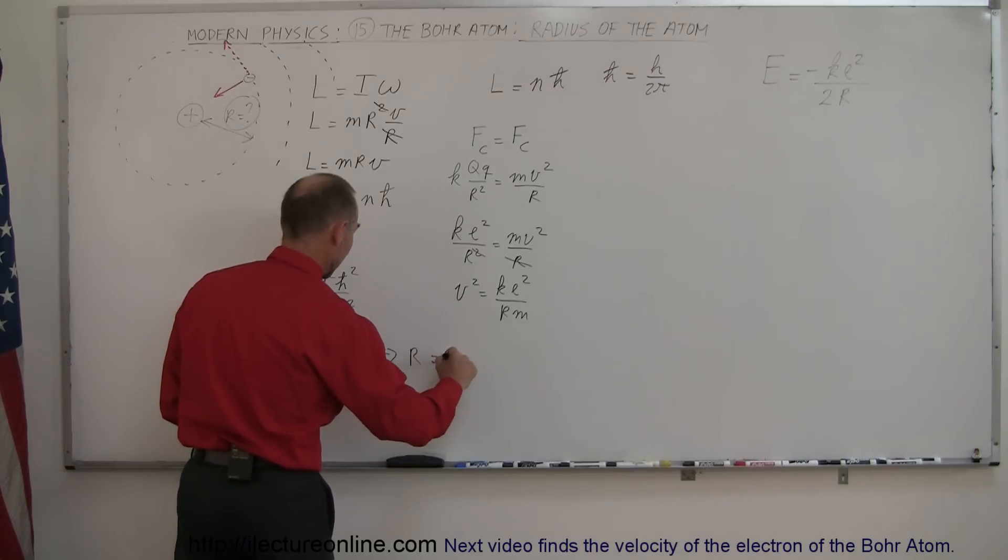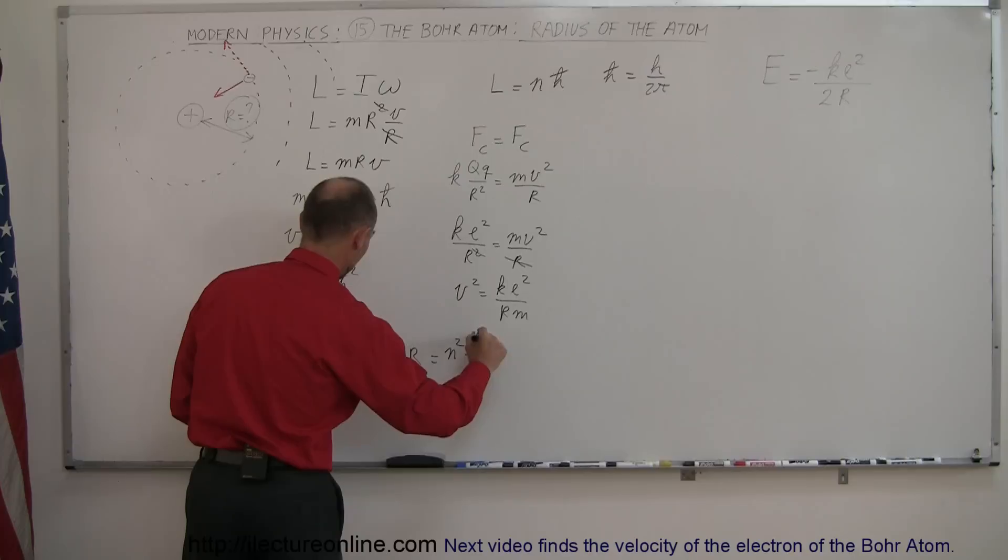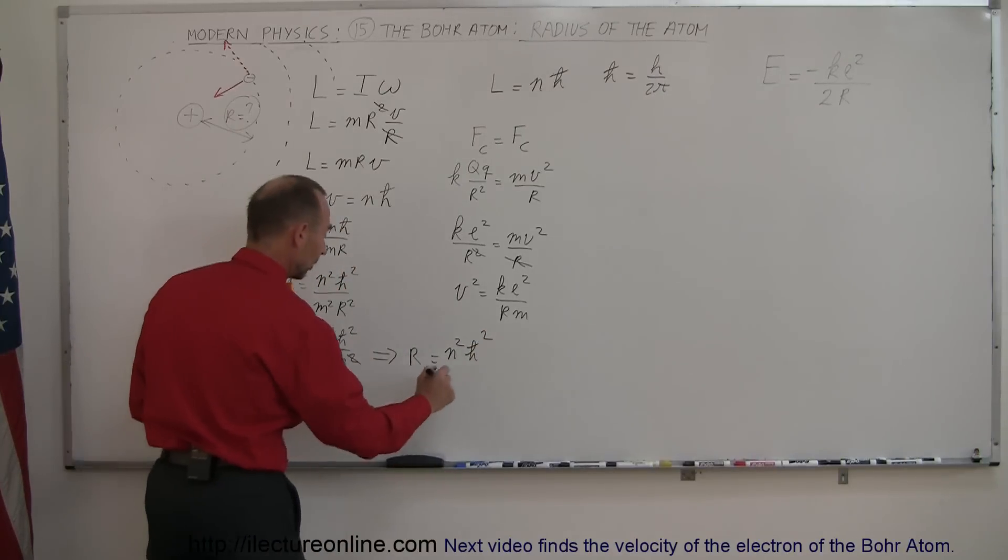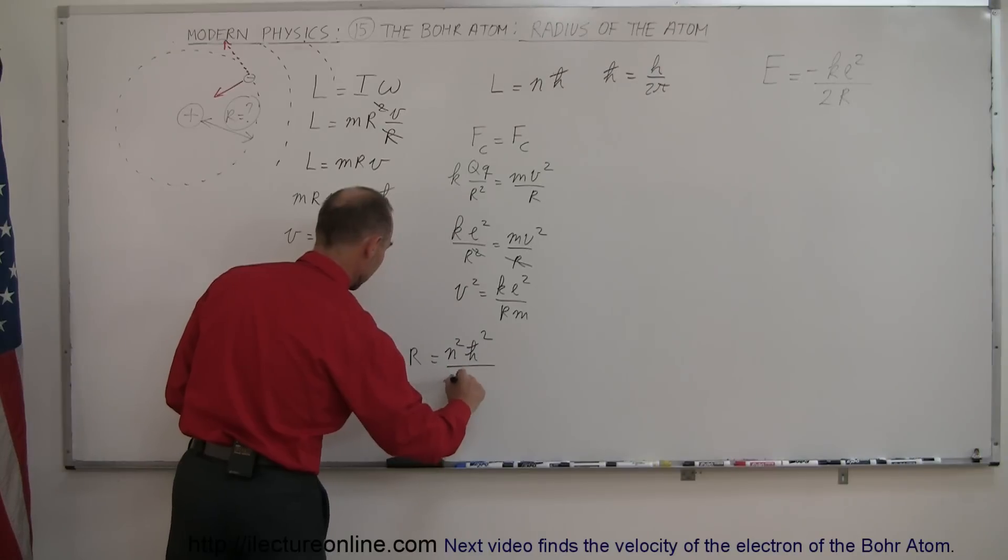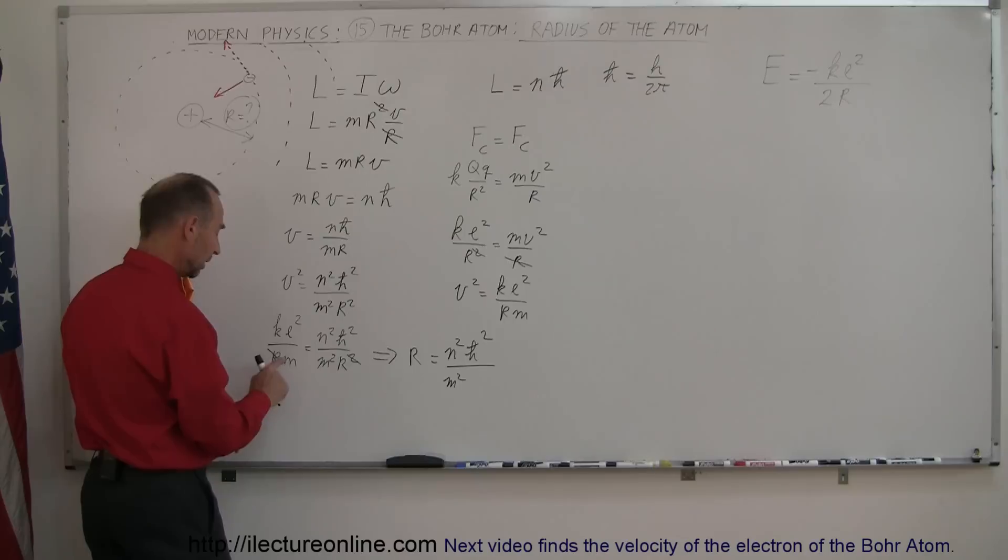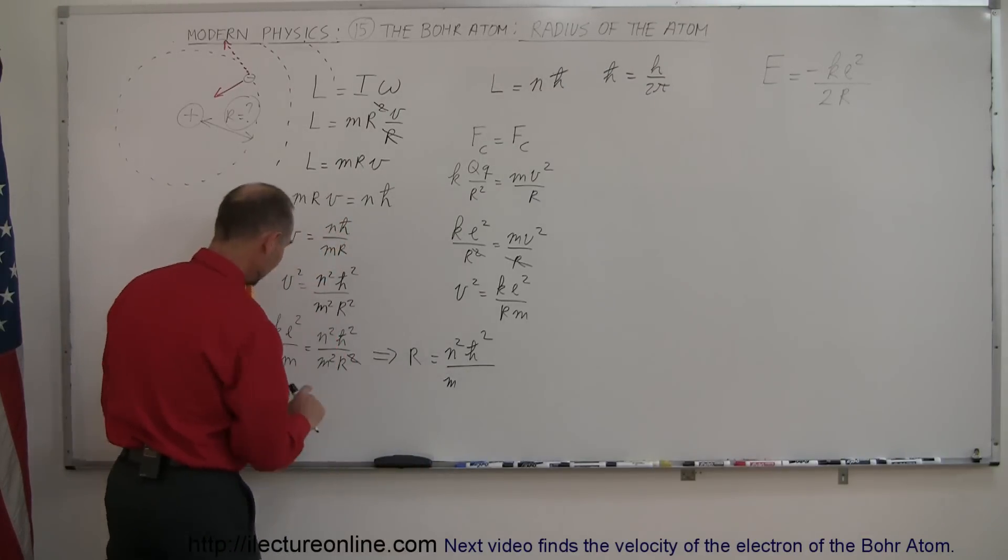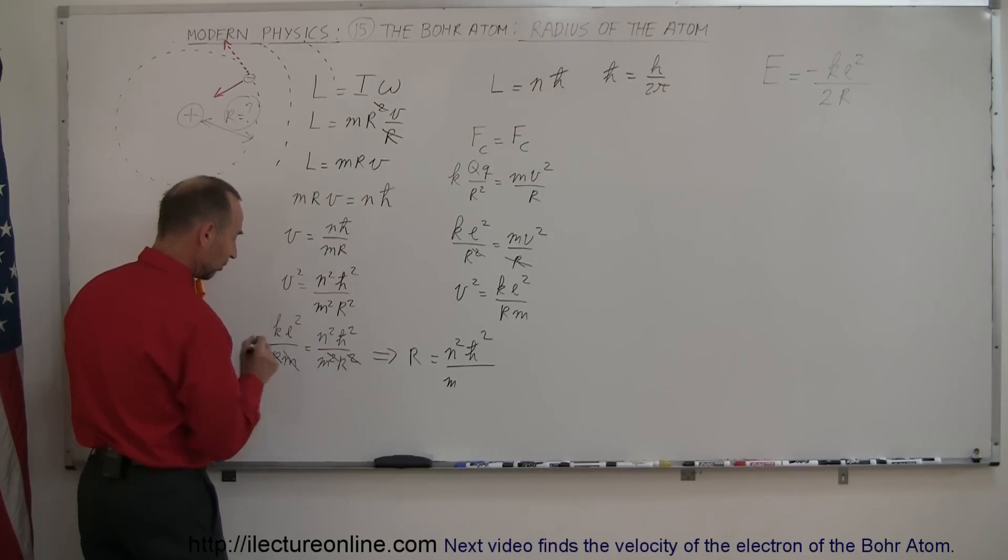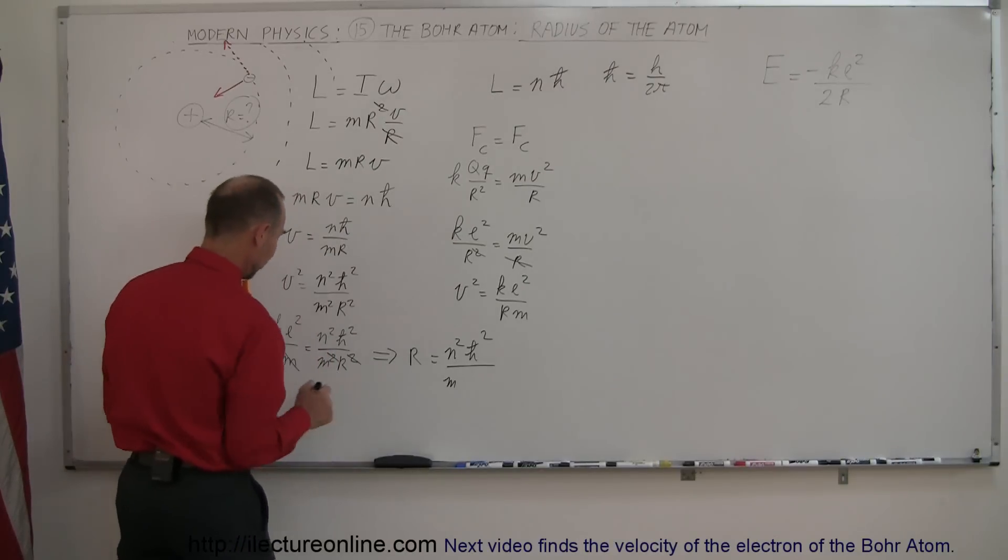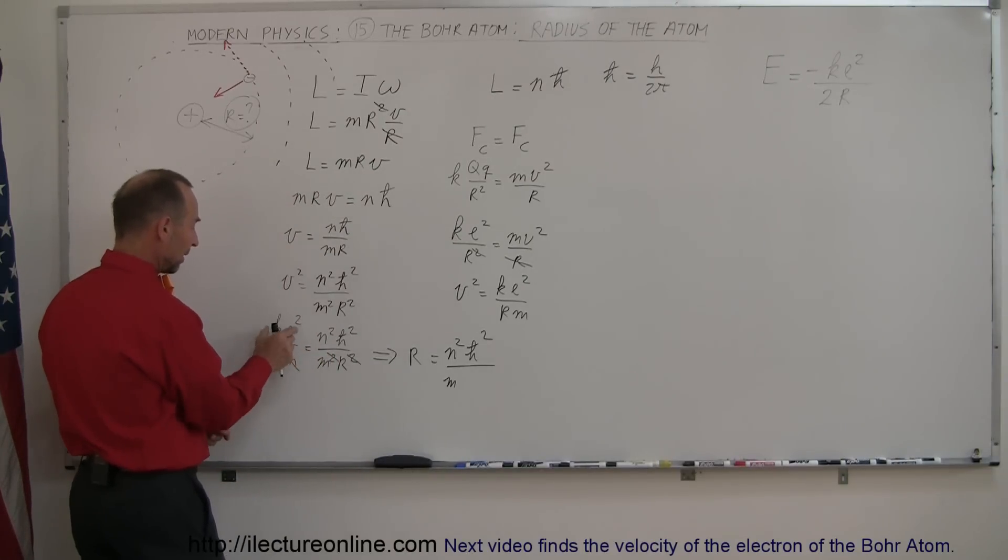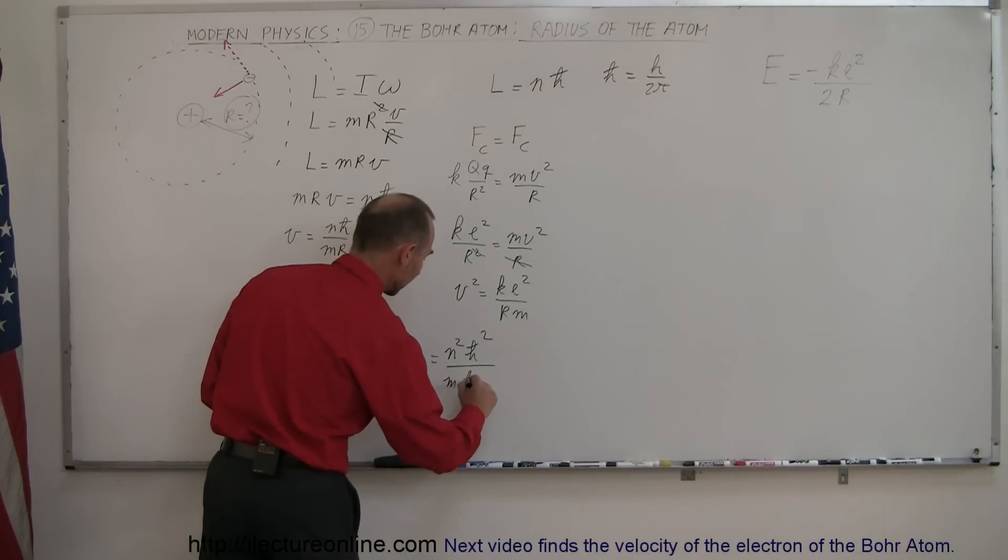Everything else should be known: k is a constant, ℏ is a constant, n is just an integer, e is the charge of an electron, and m is the mass of the electron. When we solve for r, we get r = n²ℏ²/(mke²). This should give us the radius of the hydrogen atom.